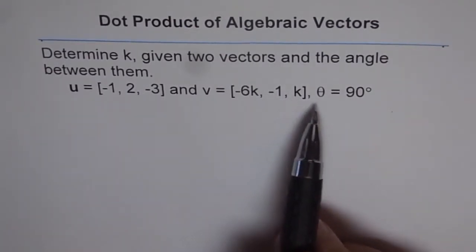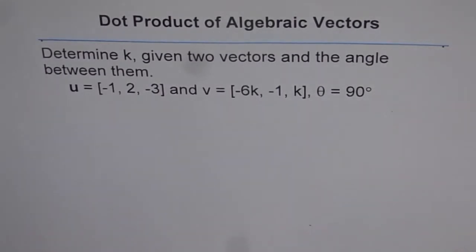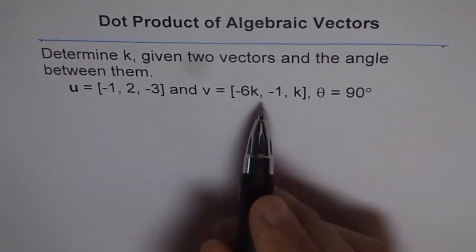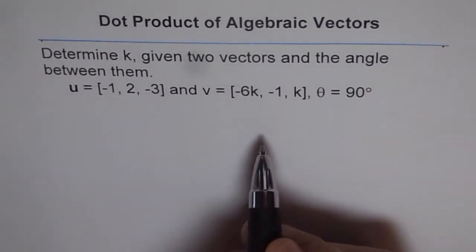The angle between them is theta, which equals 90 degrees. To find the value of k, we can find the dot product and equate them.